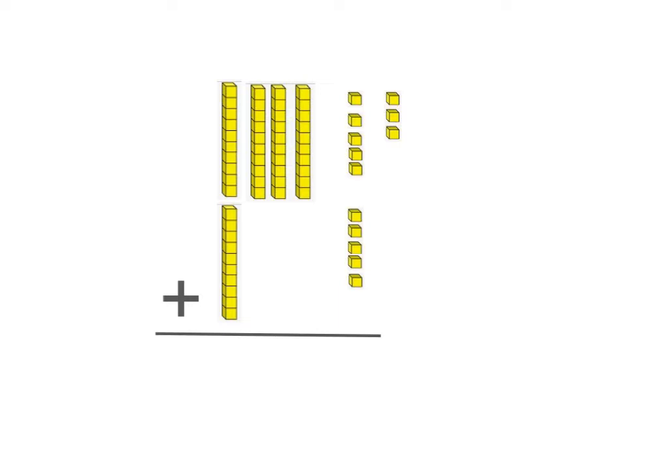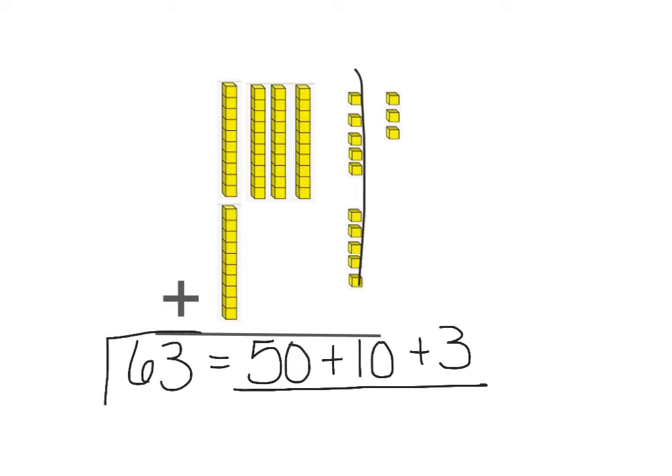We have a 40 plus 10 equals 50. 5 and 5. Hopefully you were cheering when you saw that. 5 and 5 together. And then the extra 3. So 50 plus 10 equals 60 plus 3 equals 63.